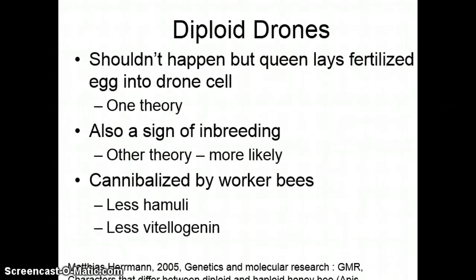One theory is that drone cell size is larger — the cell is physically bigger. So the queen somehow misunderstands and puts a fertilized egg into the drone-sized cell. That's one theory, but that's probably not as likely. More likely is that this is a sign of inbreeding. These diploid drones have less hamuli, which is the wing attachment, and also less vitellogenin, which is a hormone we'll talk about in a couple of classes.